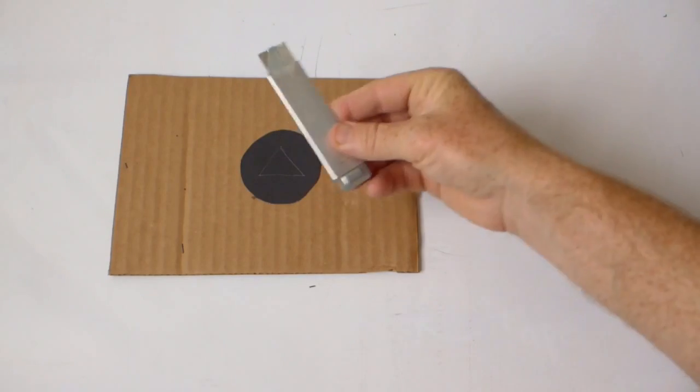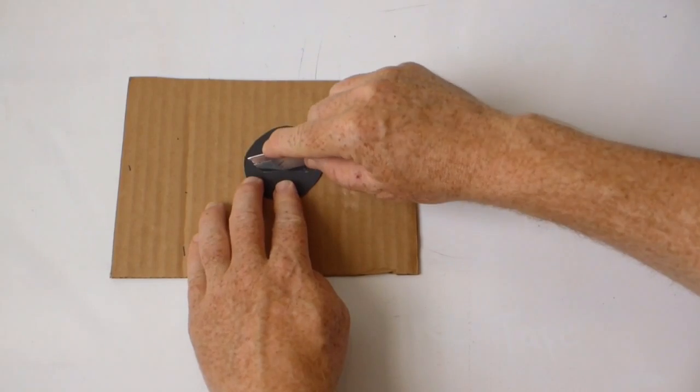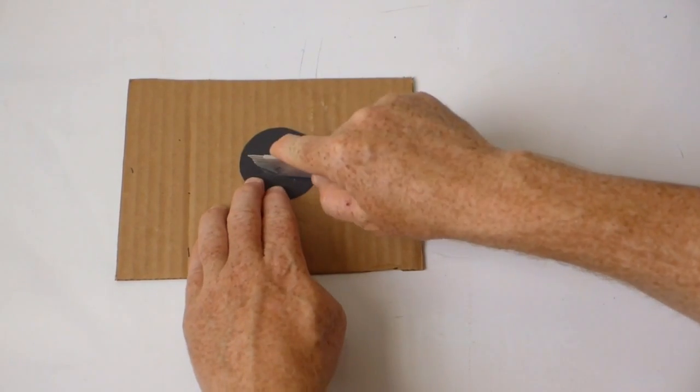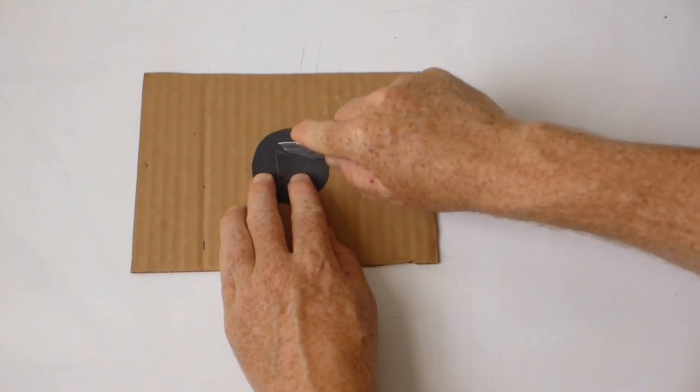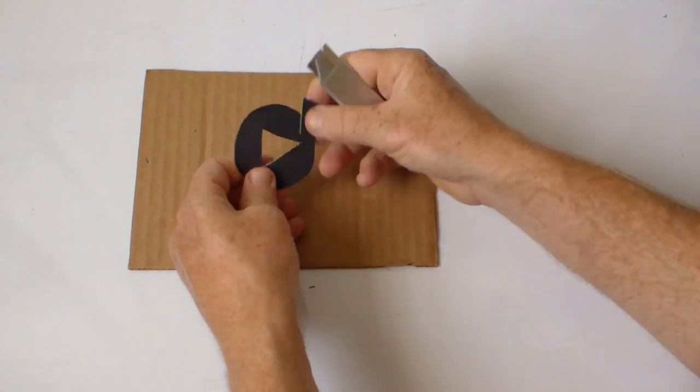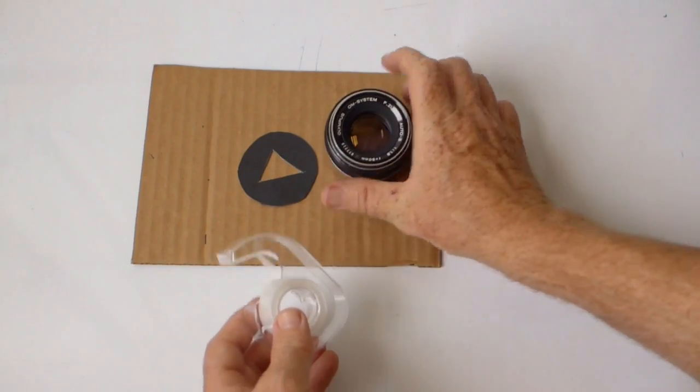And now I'll use the X-Acto knife or razor to cut out that triangle. Okay, now that we've made all of our cuts, let's get some tape and tape this to the front of our lens.